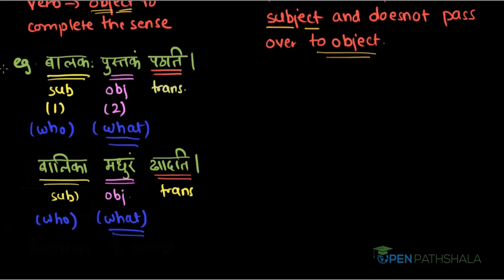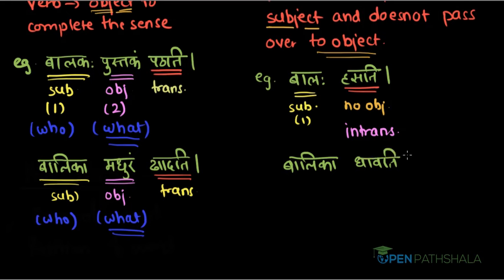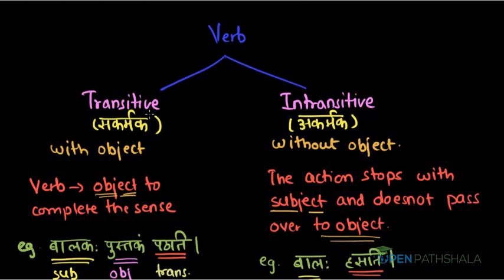Now let us take examples of intransitive verbs. Balah Hasati. Who is laughing? The answer is Balah — that is our subject in nominative case. If we ask 'what is laughing,' that question makes no sense, meaning this verb has no object. So this verb is intransitive. Another example: Balika Dhawati. Who is running? The answer is Balika — our subject. Again, asking 'what is running' makes no sense, so it has no object and this verb is intransitive. So understanding transitive and intransitive verbs is essential for understanding voice.